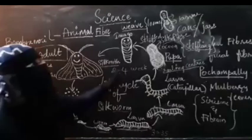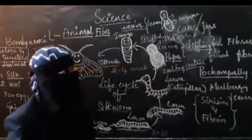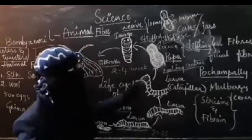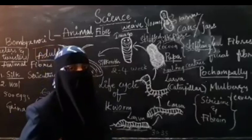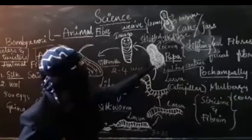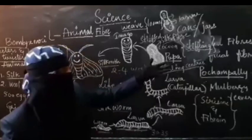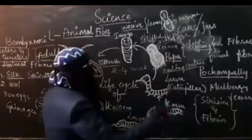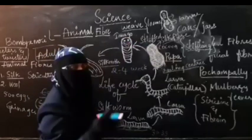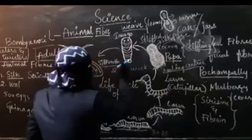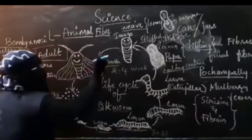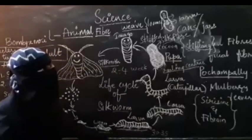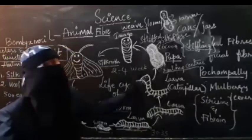To continue sericulture next time, not all cocoons are used for fiber extraction. Some cocoons are kept aside safely. After some days, these cocoons change into imago, and then into adult silk moths. These silk moths are again kept in grill mesh boxes, they lay eggs, and the cycle continues. This is the life cycle of the silk moth.